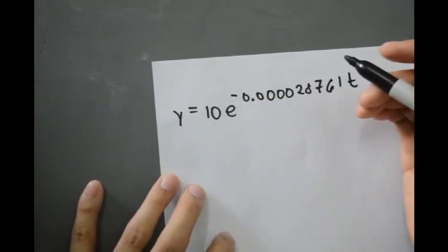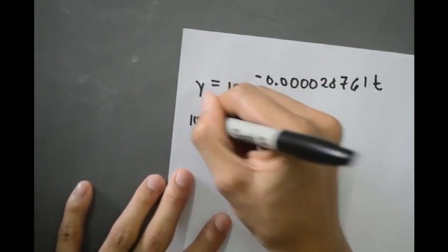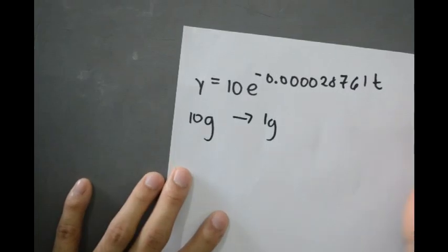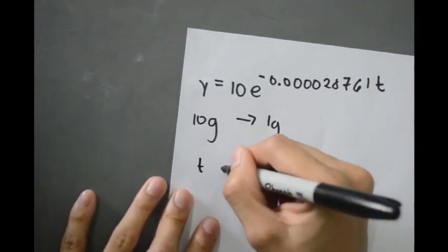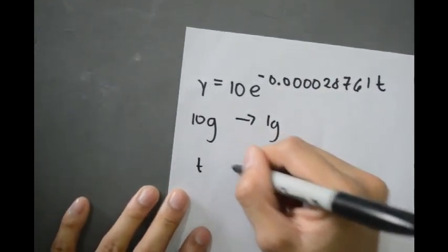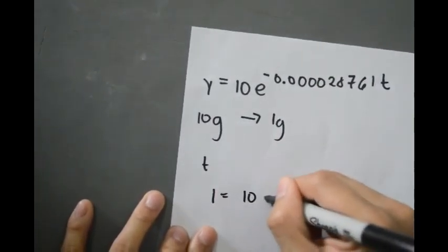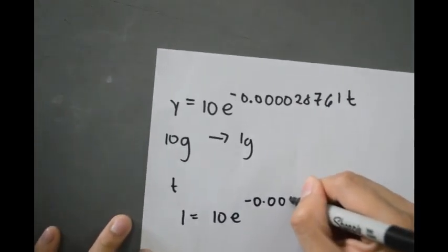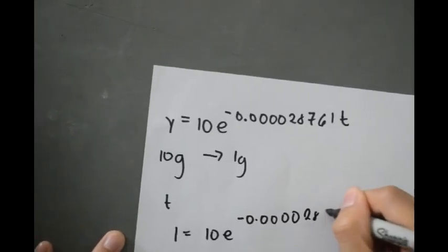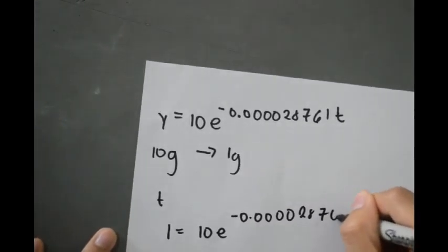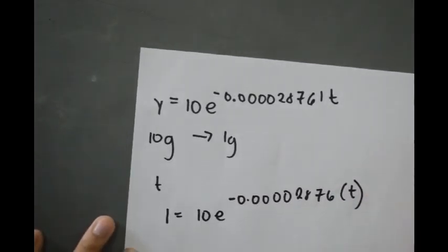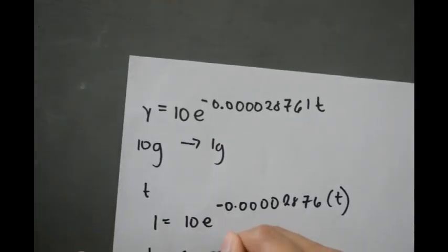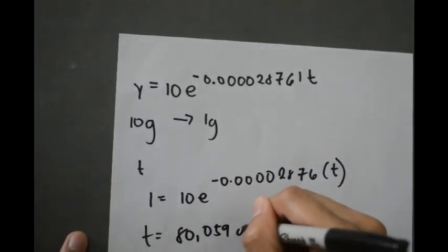To find the time it takes for 10 grams to decay to 1 gram, we solve for t: 1 equals 10 times e raised to negative 0.0000287 times t. The solution is t is equivalent to 80,059 years.